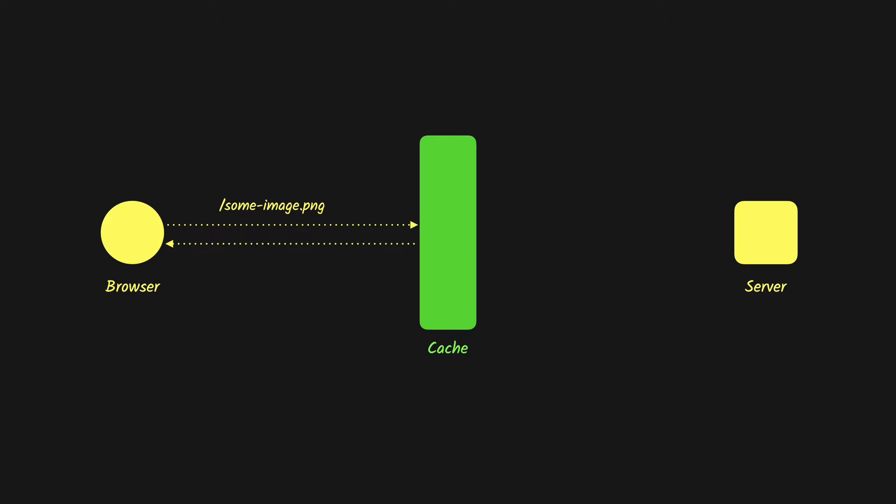This brings us a couple of benefits. First, we have faster response times because the requests are not going to the server, so our response times are going to be much lower. Secondly, because the items are returned from the cache and not the server, our server bandwidth usage is going to decrease. And third, the load on the server is also going to decrease because not all requests are going to the server.